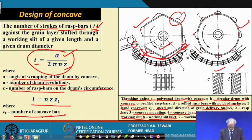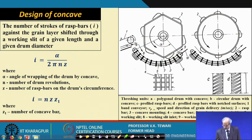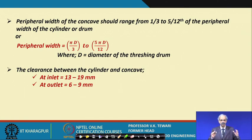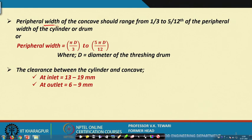The peripheral width of the concave should range from one-third to five-twelfths of the peripheral width of the cylinder or drum. If the diameter is D, the peripheral width varies from πD/3 to 5πD/12. This range comes from researcher experience and forms the basis of concave design.